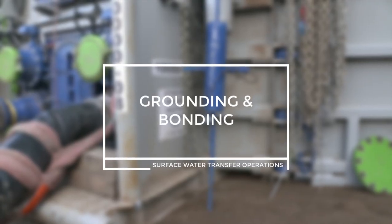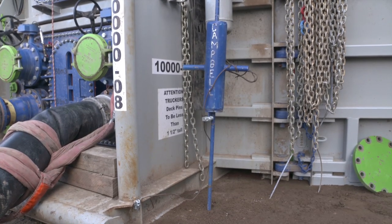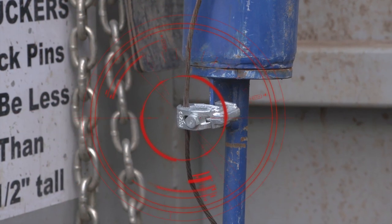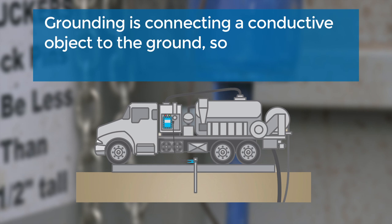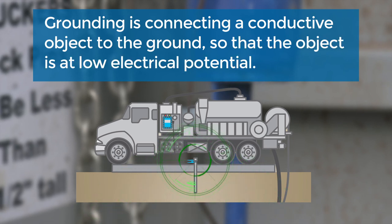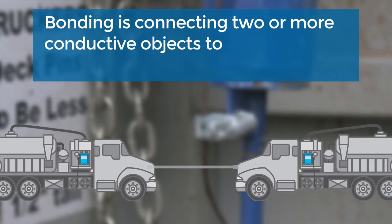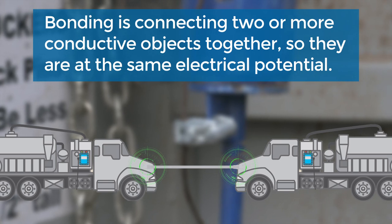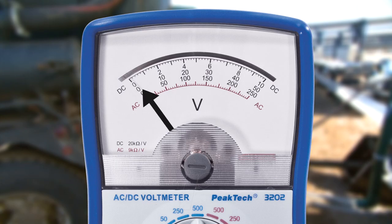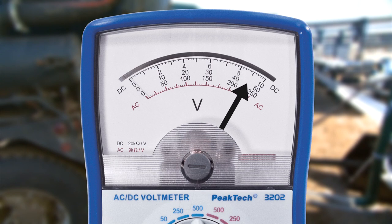Grounding and bonding. Grounding and bonding is important to maintain safe electrical operations and ensure equipment operates consistently. Grounding is connecting a conductive object to the ground so that the object is at low electrical potential. Bonding is connecting two or more conductive objects together so they are at the same electrical potential, but this is not necessarily low electrical potential. Without grounding and bonding, equipment may function unreliably, may build up charge and shock, and could become an ignition source.